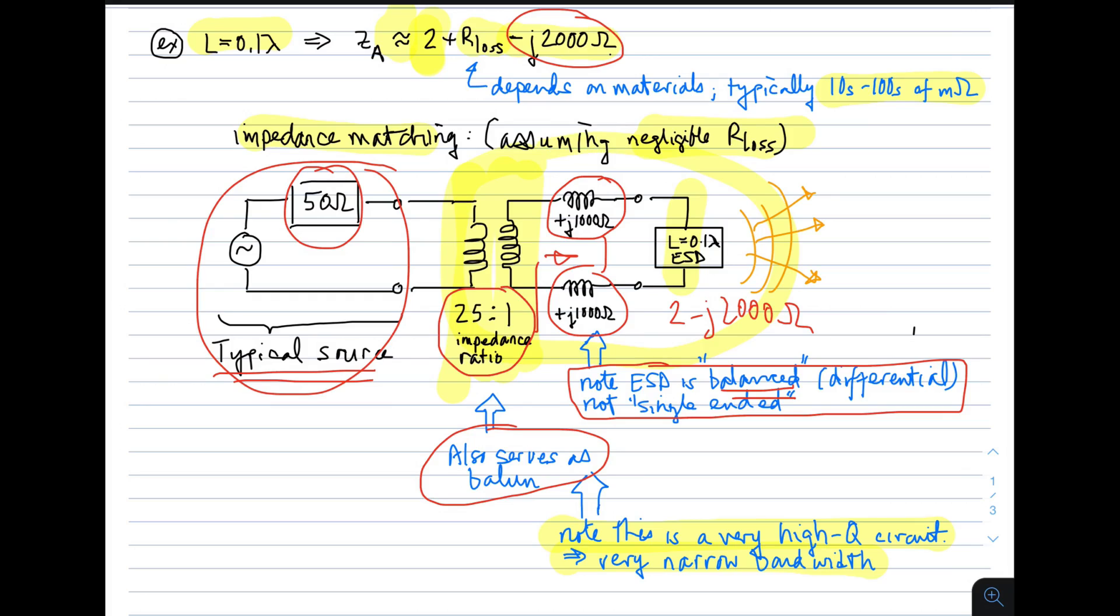And that can be a problem if you have a system which has a large tuning range, for example. So there are the features of an electrically short dipole. That concludes this lecture. Thank you.